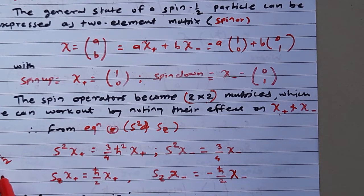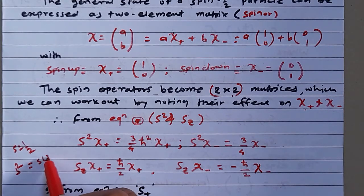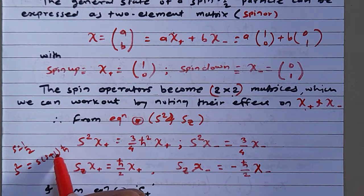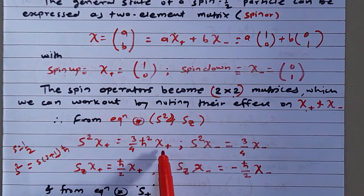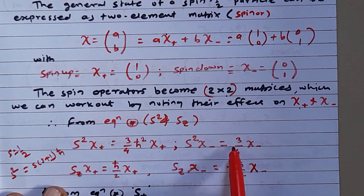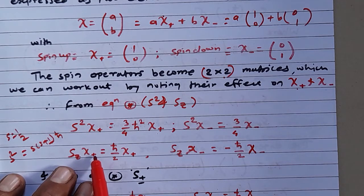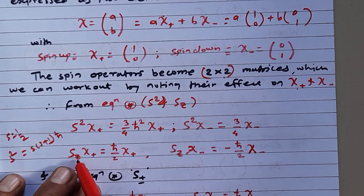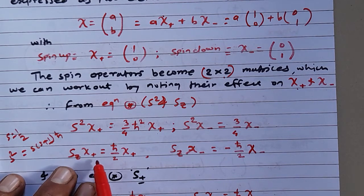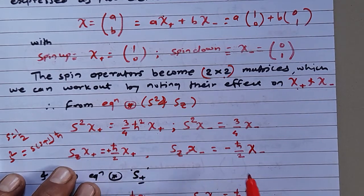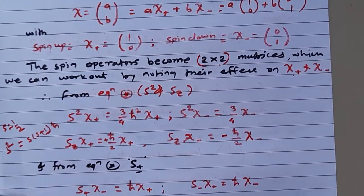Since S is one-half, the eigenvalue of S² is S(S+1)ℏ², which gives (3/4)ℏ² times χ-plus as its eigenstate. Similarly, S² operating on χ-minus gives (3/4)ℏ² times χ-minus. When Sz operates on the spin-up state χ-plus, it gives Mℏ times χ-plus, where M = +½, giving +ℏ/2. For χ-minus, the eigenvalue is -ℏ/2.